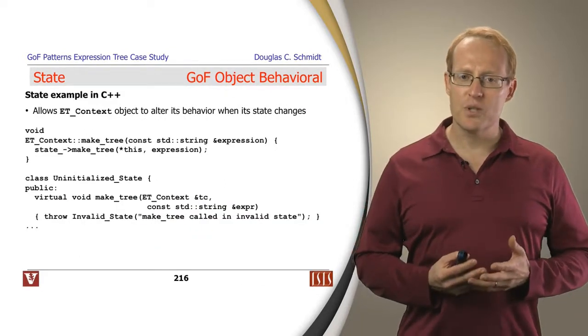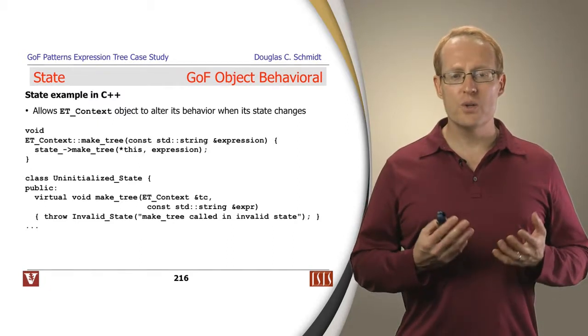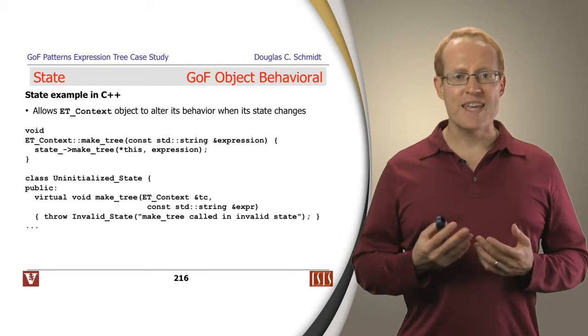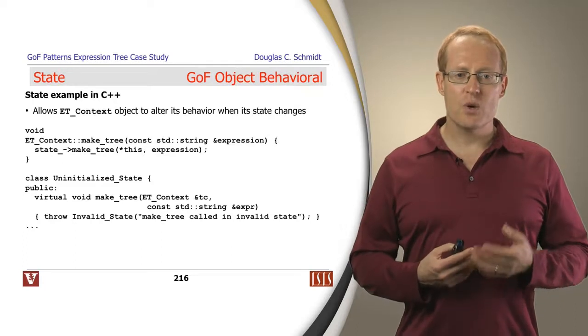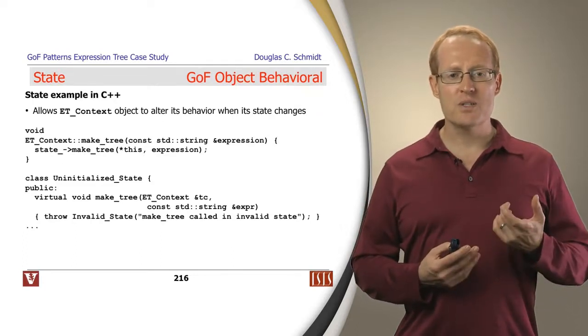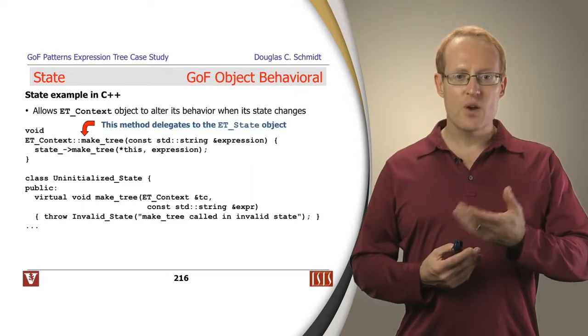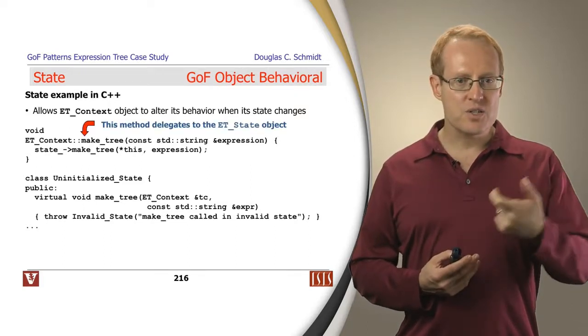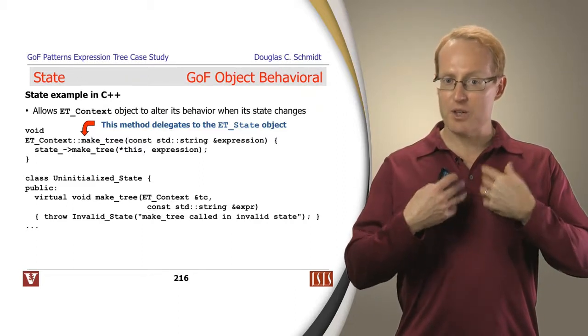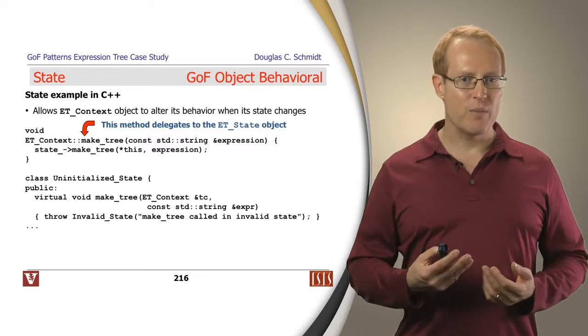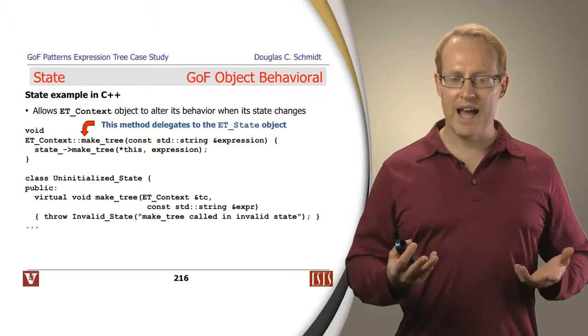Here's a simple example that shows how we might apply this pattern in our expression tree processing application. We're going to use this pattern to allow the ET context object to alter its behavior when its state changes. So here's how it might work. Notice that the ET context makeTree method when it's called will turn around and say state makeTree and it passes the context object, it passes this in as the first parameter and then it also passes in the expression that's being asked for the tree to be made for.